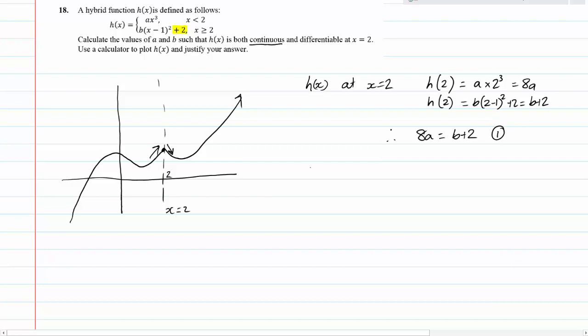Secondly, we have to work out what h dash of x is equal to at x equals 2. So we have h dash of x is equal to these two functions. 3a x squared for x is less than 2 and 2b x minus 1 for x is greater than 2.